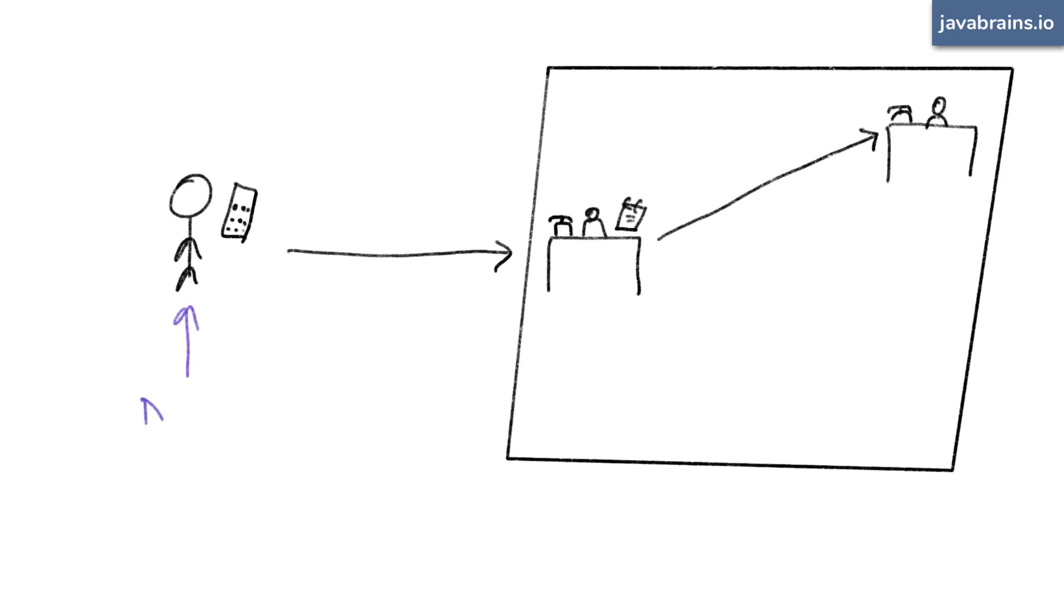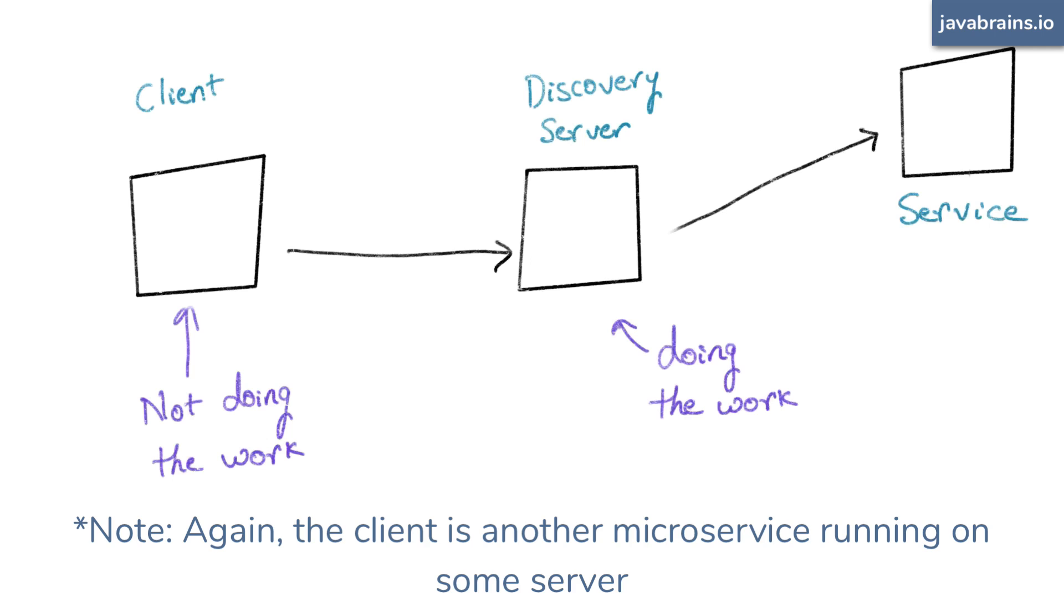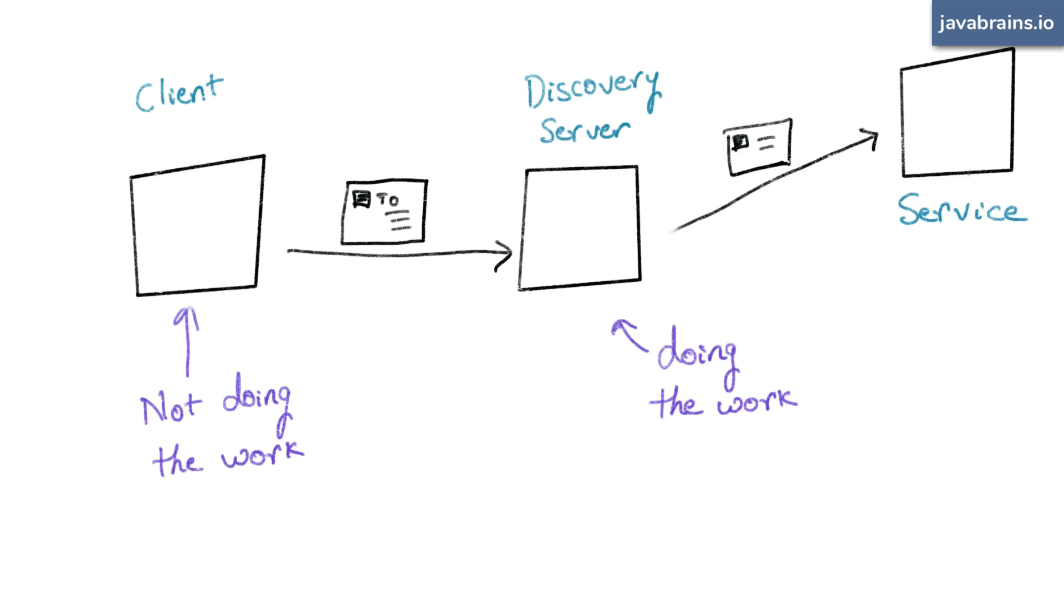The receptionist still has all the information. She knows or can look up who works in the company and what their extension numbers are, but she doesn't give you the information. She makes sure that your request reaches the right person directly. In this model, the client isn't doing the work. There's something on the server that's doing the work for you. This is server-side service discovery. Just like you can implement client-side service discovery, you can also implement server-side service discovery in microservices. You essentially have something running on the server that accepts requests. The client sends the request and the information about the service it actually wants to reach, and this entity on the server channels or transports it to the right destination.